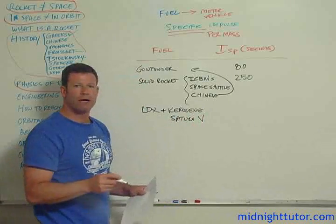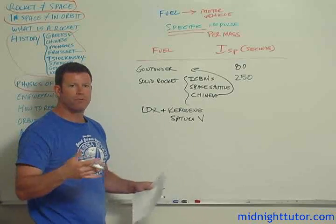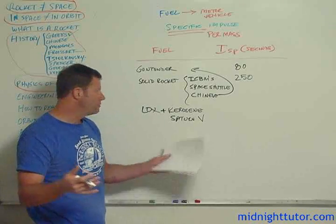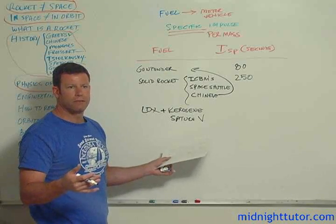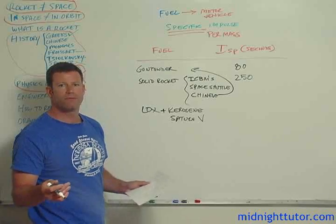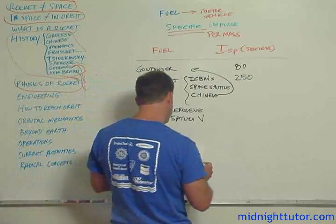Right, the Saturn V was the rocket that went to the Moon, the first one that went to the Moon, and then we, you know, Apollo 11 through 17 all used Saturn Vs. The largest rocket, at least the United States has ever built, roughly almost 8 million pounds of thrust. That had an ISP of 260.